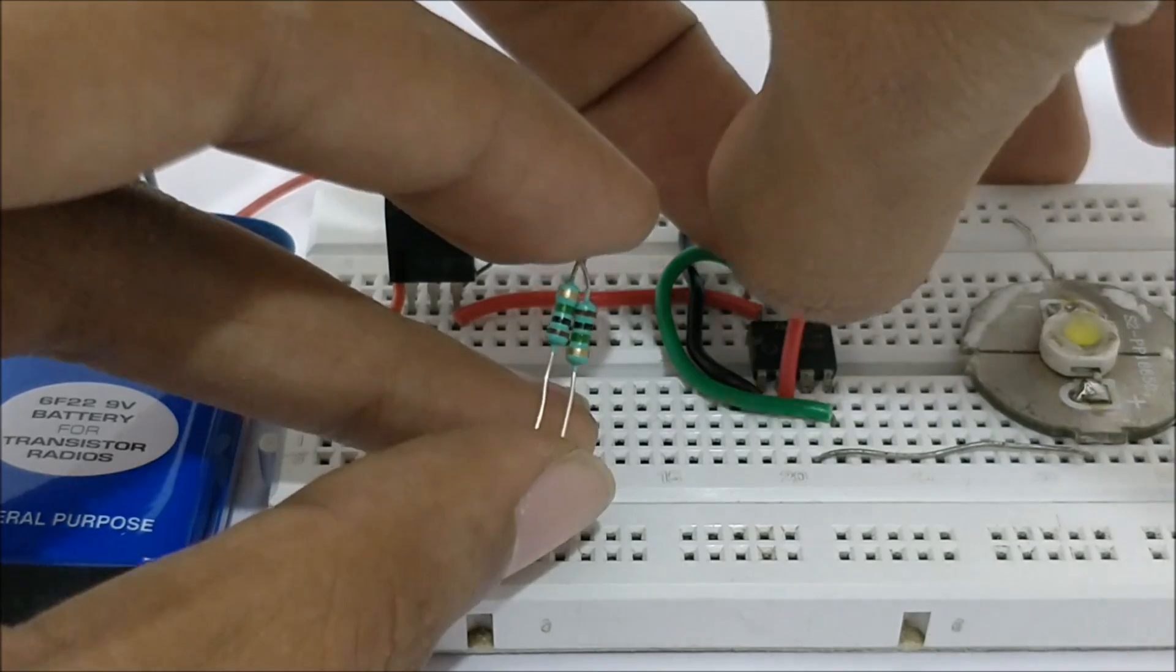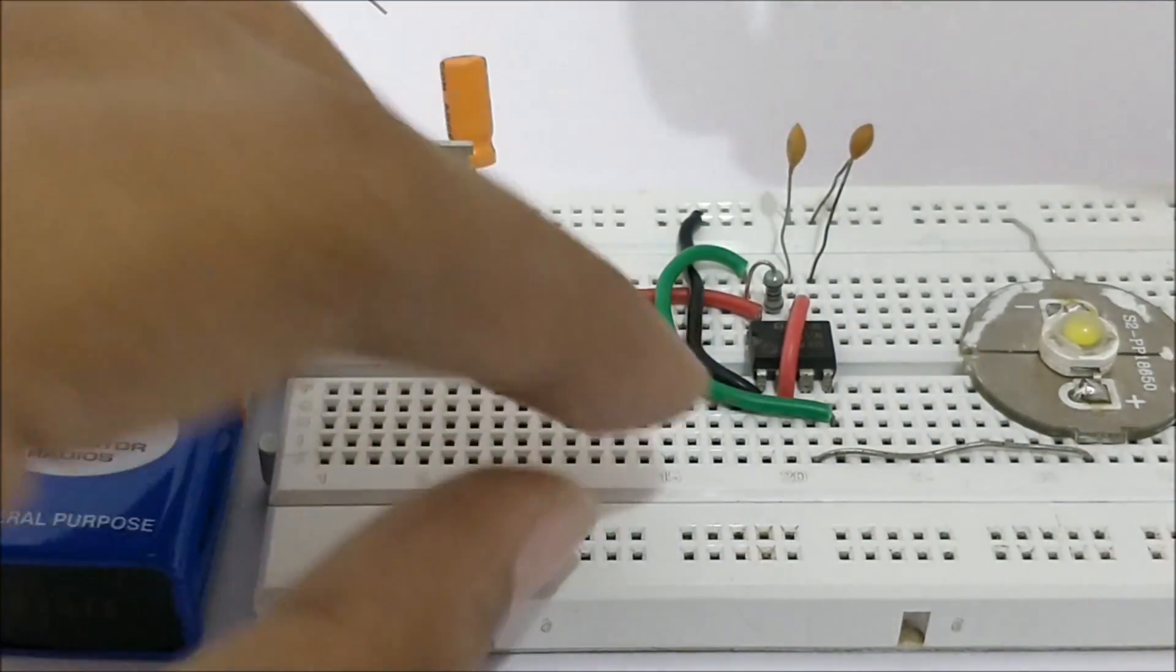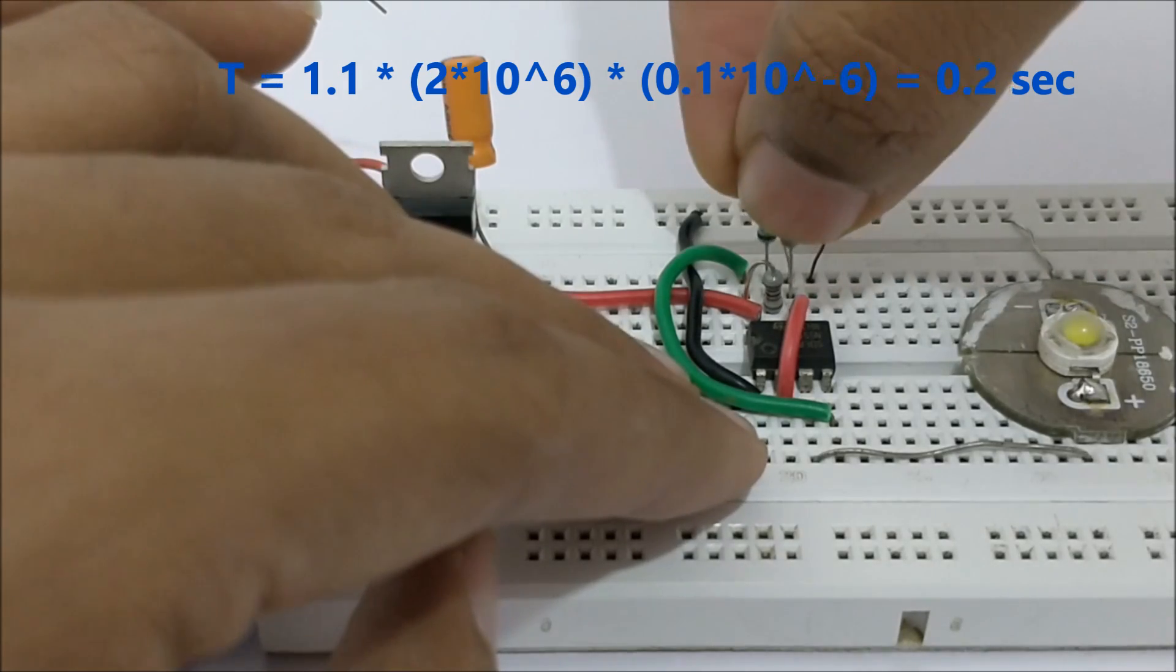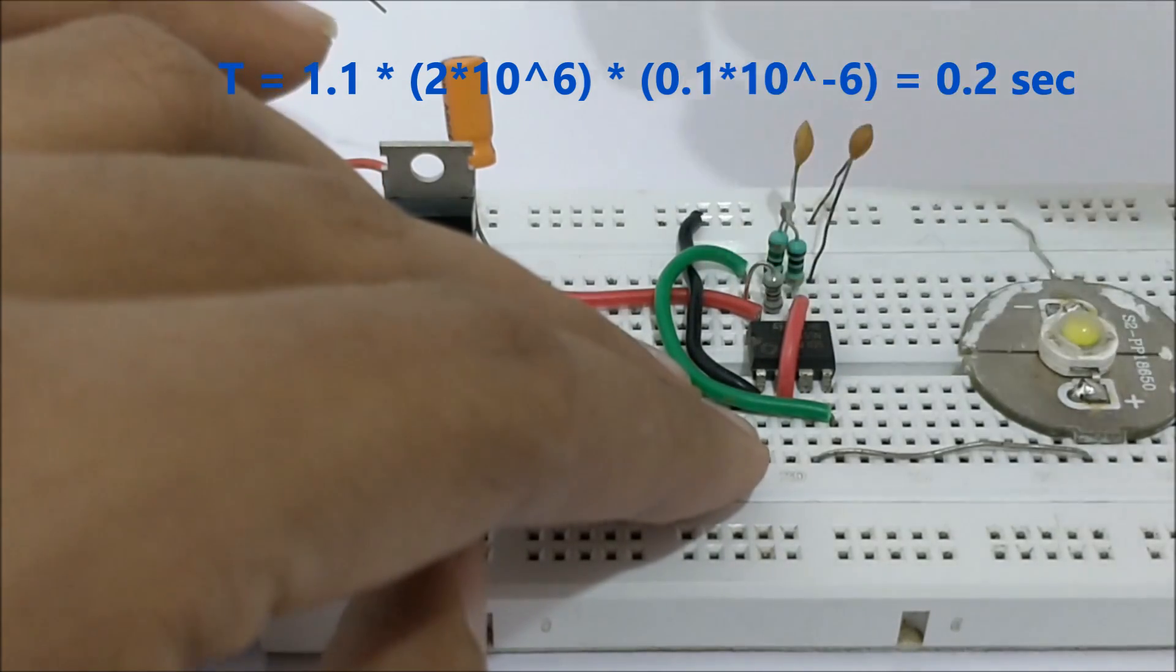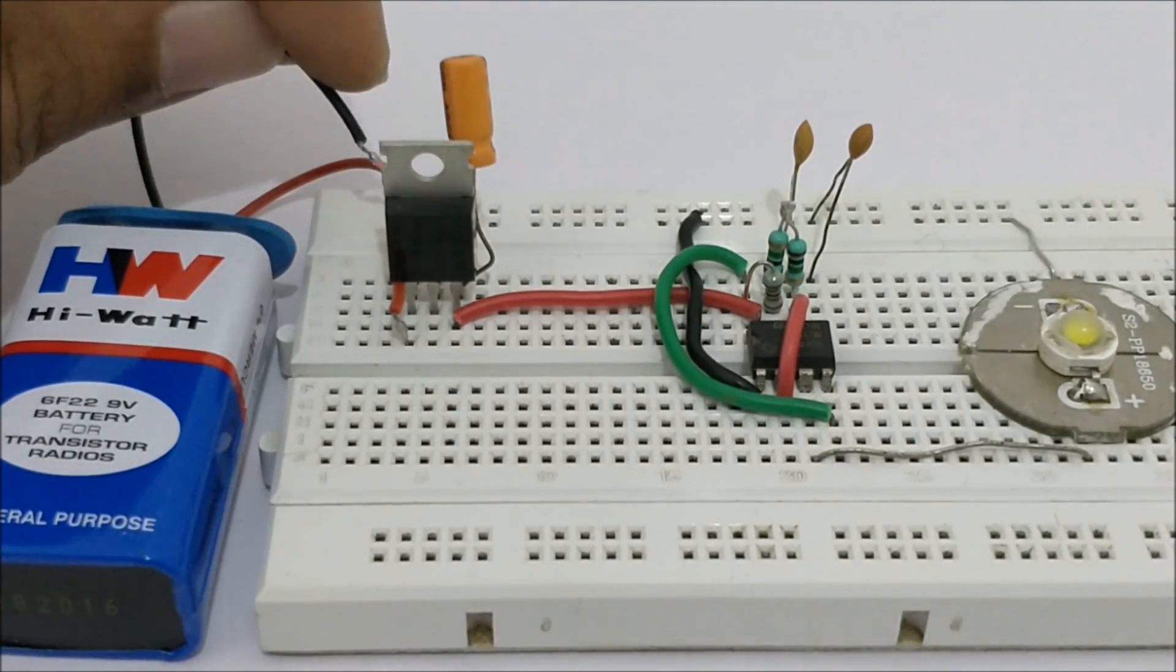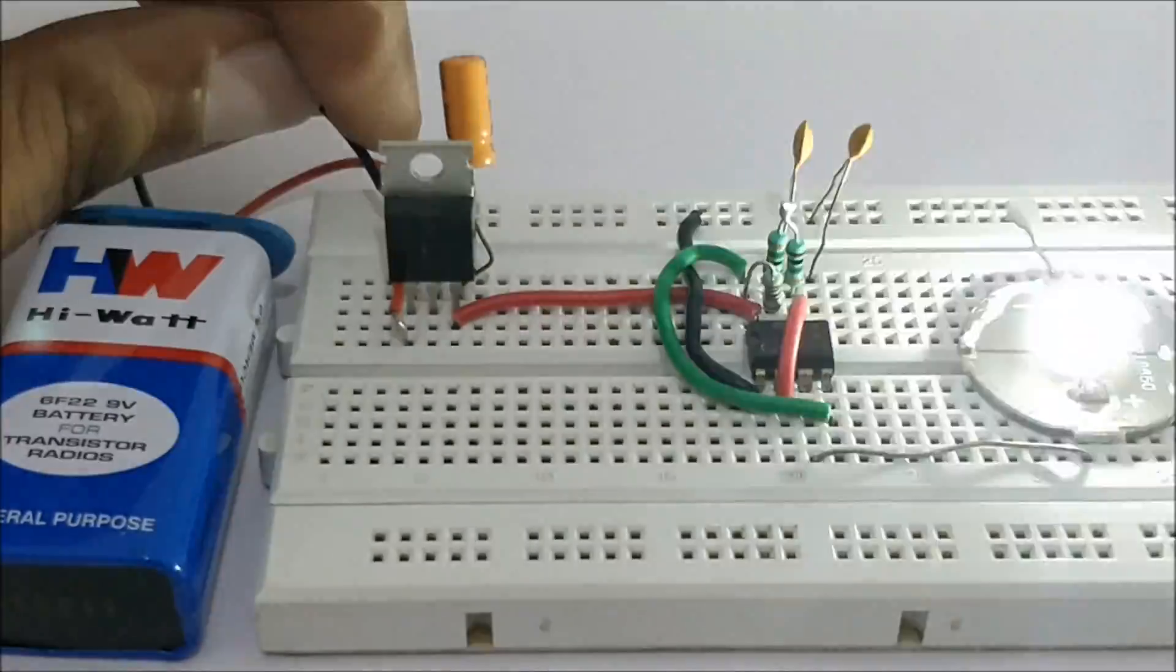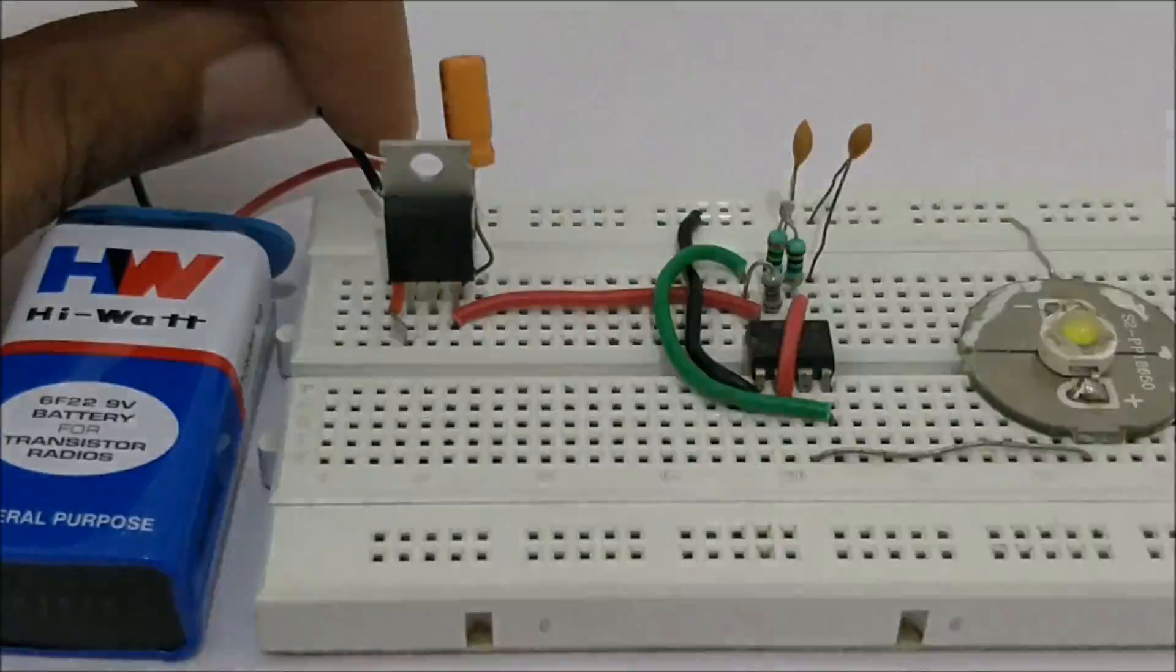So let me replace this 1 megaohm with a 2 megaohm and power up the circuit to see if the delay is around 0.2 seconds. As you can see, now the delay is different from the delay that we saw at the beginning.